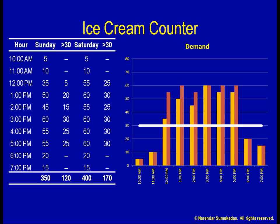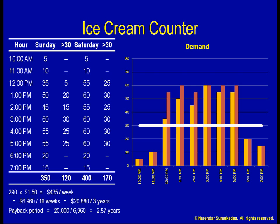If I can convert these 290 potential customers into actual customers, each week I stand to make an additional profit contribution of 290 times $1.50, which equals $435. Over a 16-week season, I will make an additional $6,960, or $20,880 over 3 years. My investment will be paid back within 2.87 years. So, I should definitely invest in the ice cream counter expansion.